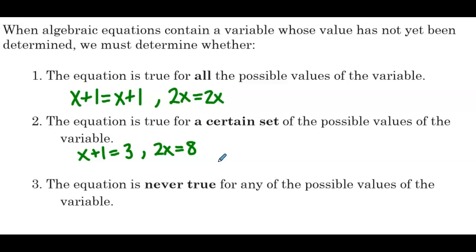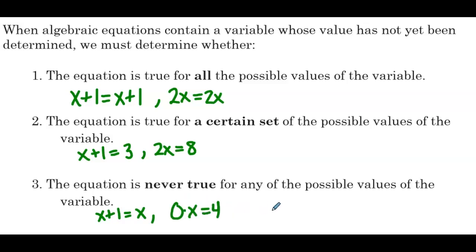The last case is an equation that is never true — you can pick any x value and the equation will not be true. An example would be x plus 1 equals x: pick an x value, add 1 on the left side, leave it on the right — those two values will never be equivalent. Another example would be 0 times x equals 4 — multiply any x by 0, and we'll never get a product equal to 4.